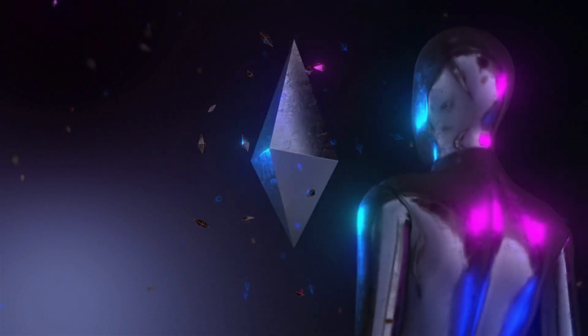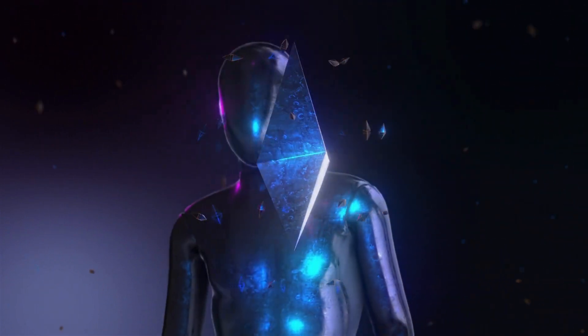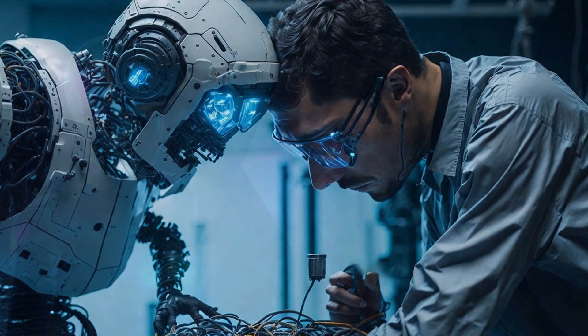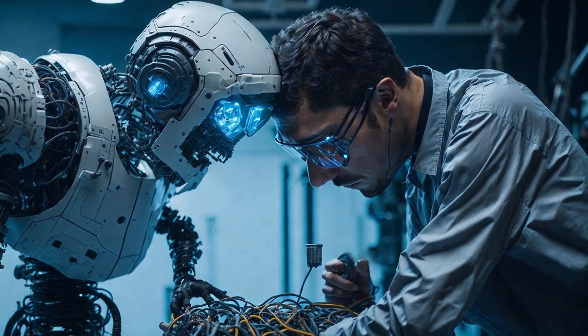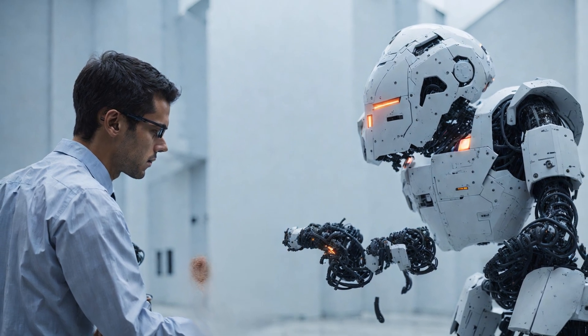To overcome these limitations, SuperAlignment proposes the use of AI systems to evaluate other AI systems. This is called scalable oversight. The idea is to leverage the intelligence and capabilities of AI to provide a more reliable and consistent training signal for AI.